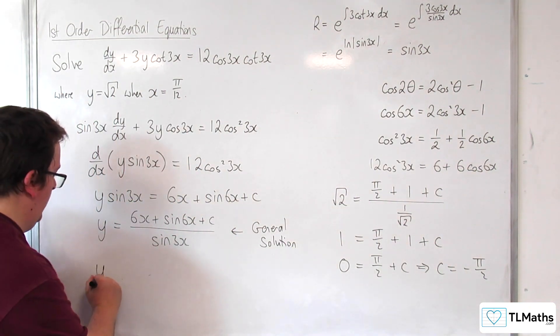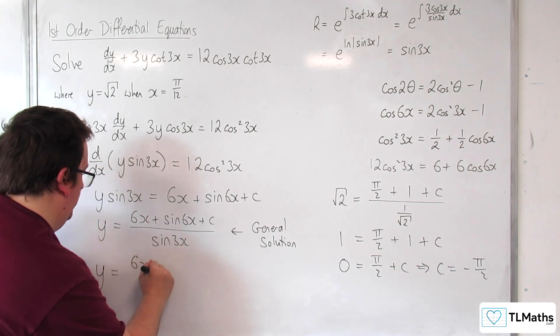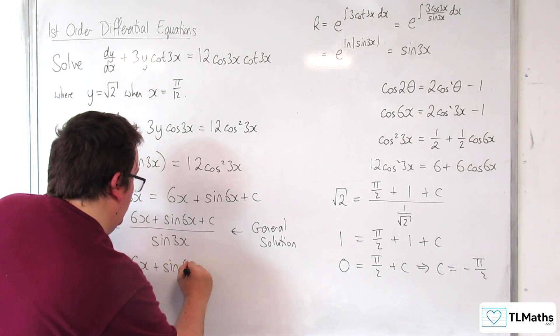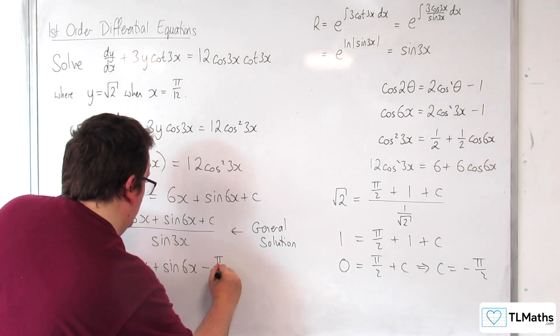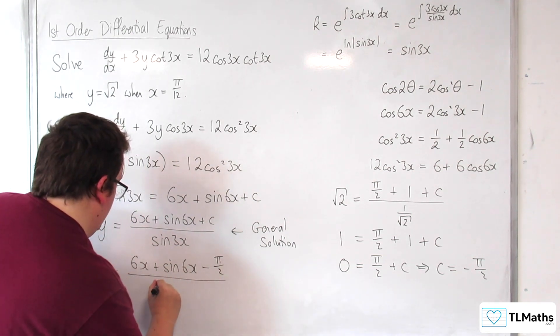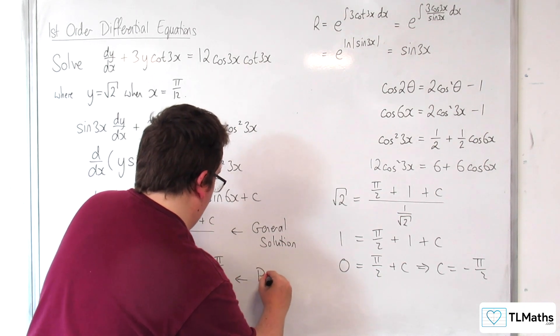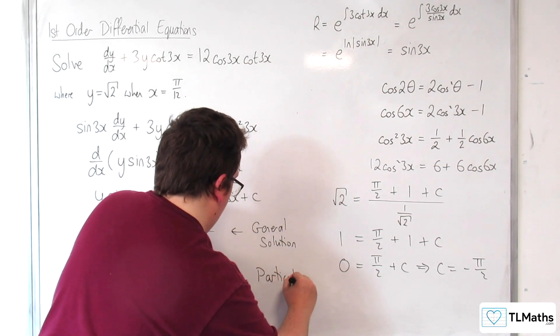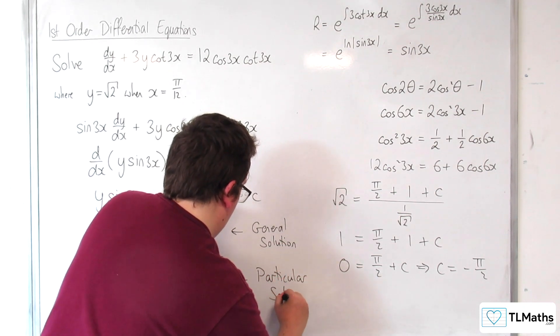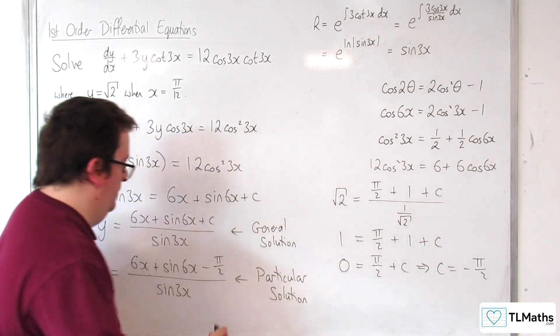So y equals 6x plus sine of 6x, take away pi over 2, over sine of 3x. This is the particular solution that I'm looking for.